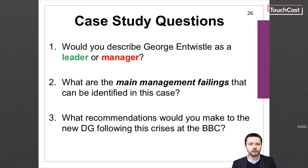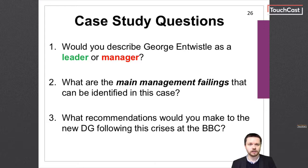Question 2: What are the main management failings that can be identified in this case? Justify your listed answers. And finally, Question 3: In your opinion, what recommendations would you make to the new Director General following this crisis at the BBC? These recommendations relate to processes, practices or people-related aspects of an organisation.